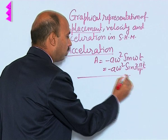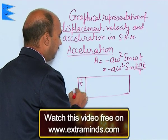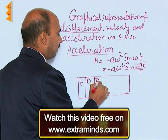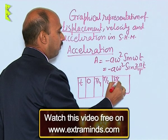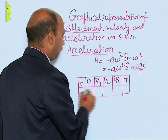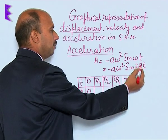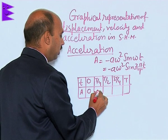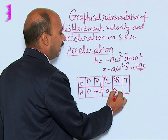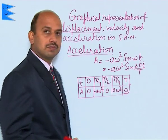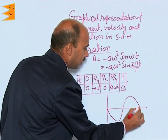Now we can draw its graph. For this, if we take t equal to 0, T/4, T/2, 3T/4, and T on the time axis, the corresponding acceleration values are: at 0 it is 0, at T/4 it is minus a omega square, at T/2 it is again 0, at 3T/4 it is a omega square, and at T it is again 0. So its graphical study will be like this.